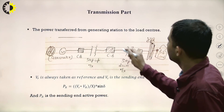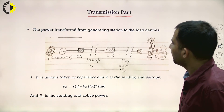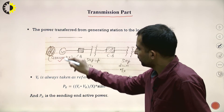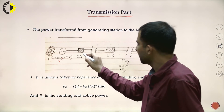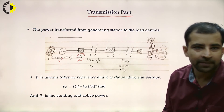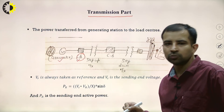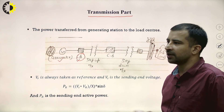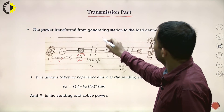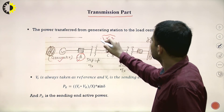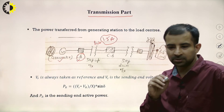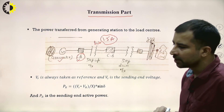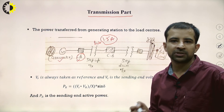The transmission part transfers power from the generation station to load centers. In the single line diagram, there is a generator, followed by a circuit breaker. The relay senses whether the current exceeds a set limit — for example, 1.5 amperes — and if it does, it signals the circuit breaker to open, protecting the system.